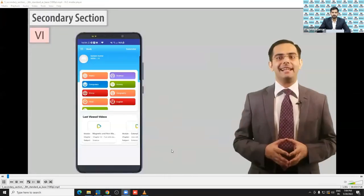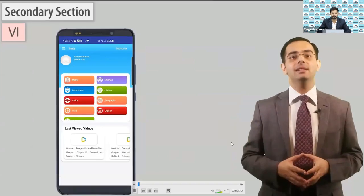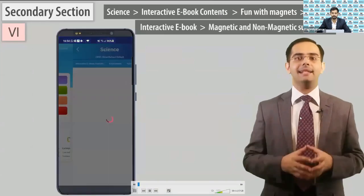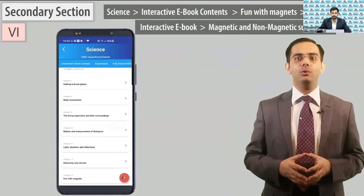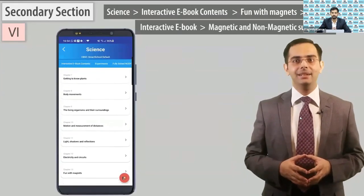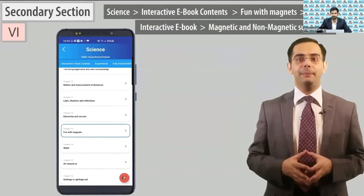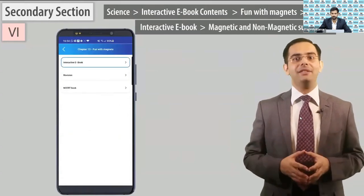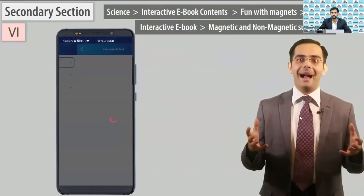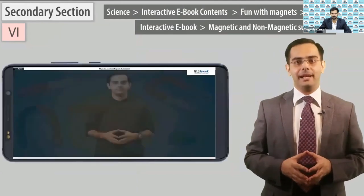Let's talk about the secondary section. Open Class 6 standard and start with the science subject. Go to interactive ebook content, open chapter 13, 'Fun with Magnets.' Open the interactive ebook and play the magnetic and non-magnetic substances module.